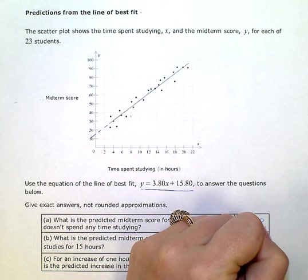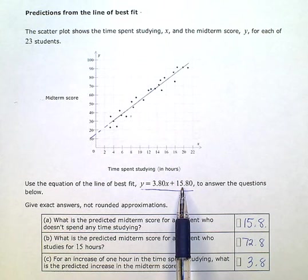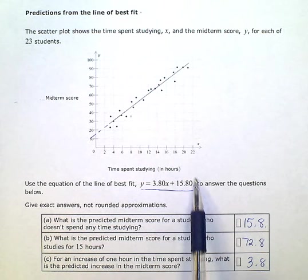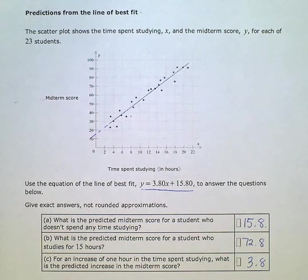So this answer right here is 3.8. This is my y intercept right there. We actually substituted in zero. We could have just seen it straight from the equation right there. 15.8 is my y intercept. There's my slope. And then we predicted a score.